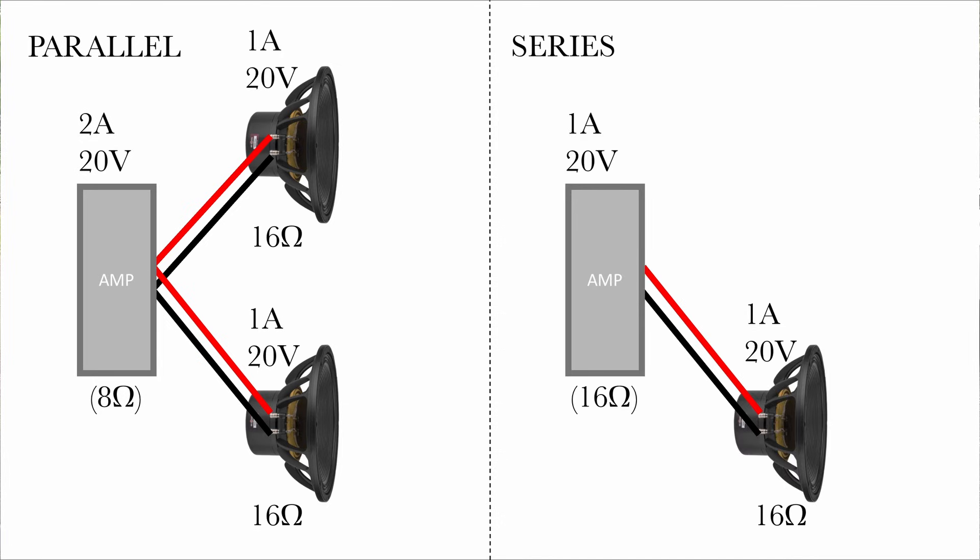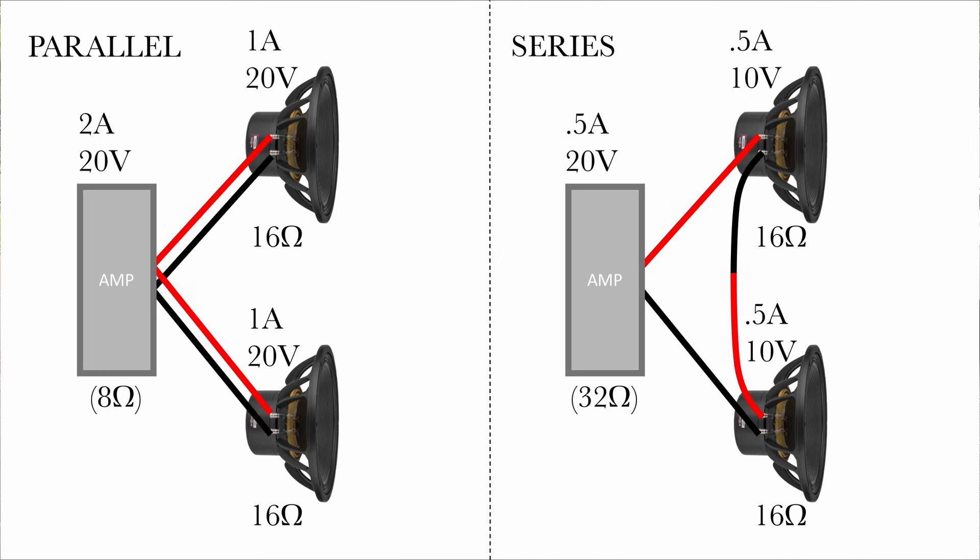With series, the amplifier sees a 32 ohm load, so the current out of the amplifier dropped by half. But the voltage output of the amp stayed the same, but it got split between the two speakers. The current stayed the same everywhere in the system.